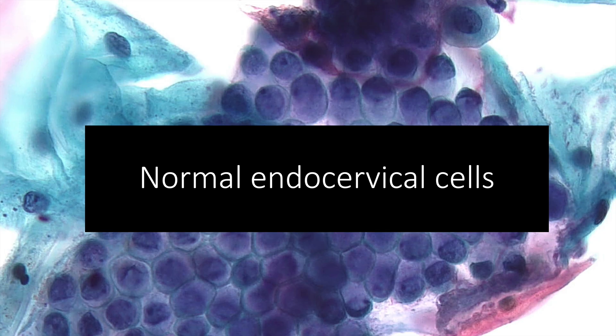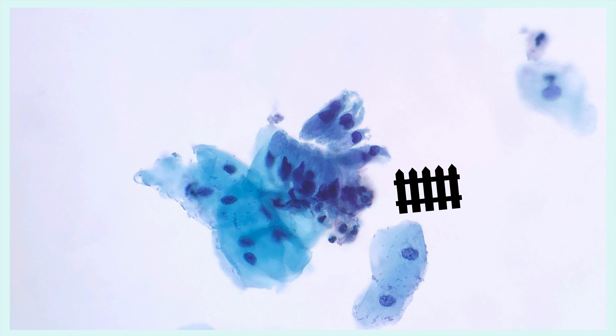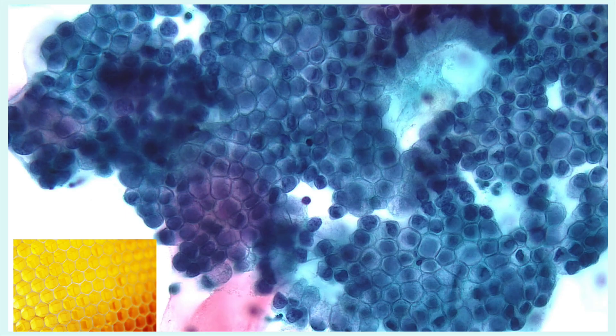First we'll cover normal endocervical cells — it's always good in cytology to establish a background. Normal endocervical cells have variably-sized nuclei with an average of 50 micrometers, shown as yellow circles, which are slightly larger than that of an intermediate squamous cell at 35 micrometers, shown as the red circle. Cells exhibit polarity with nuclei placed at one end and mucinous cytoplasm at the other, and in profile they exhibit picket fence morphology. In separate profiles, the endocervical glands demonstrate a honeycombed appearance.